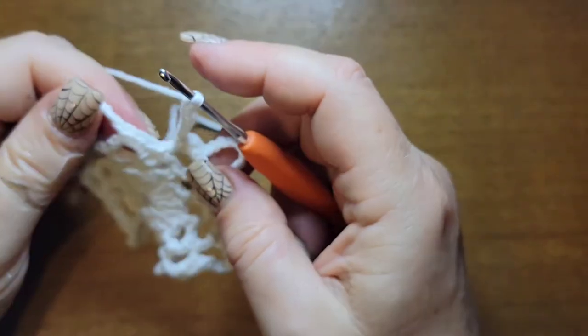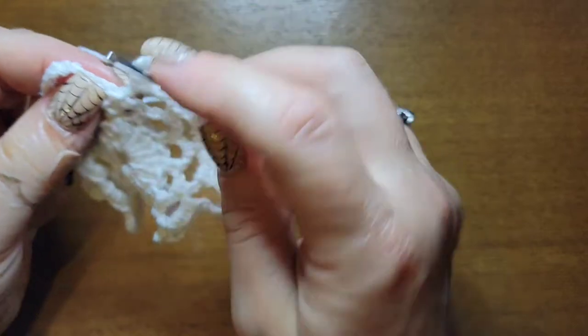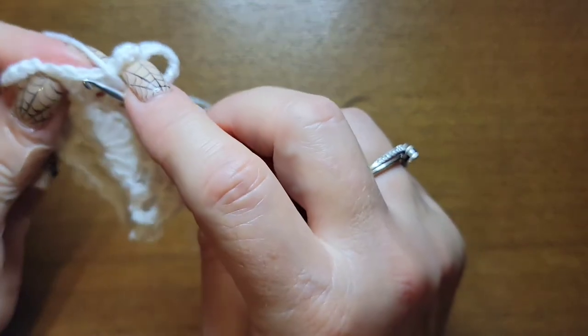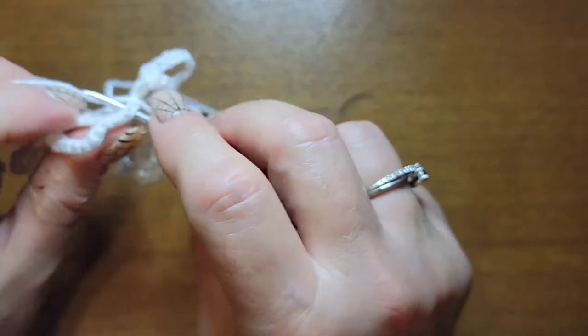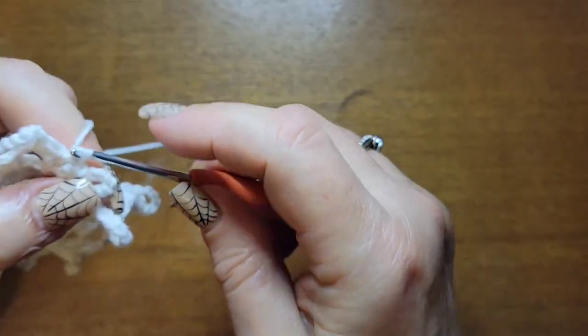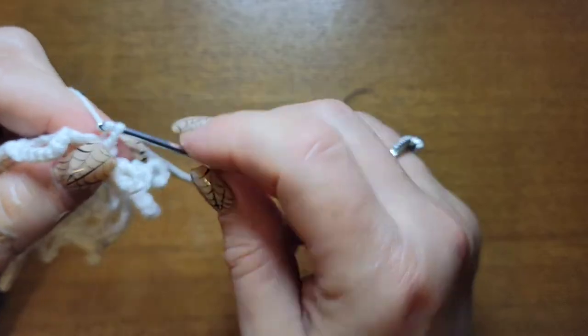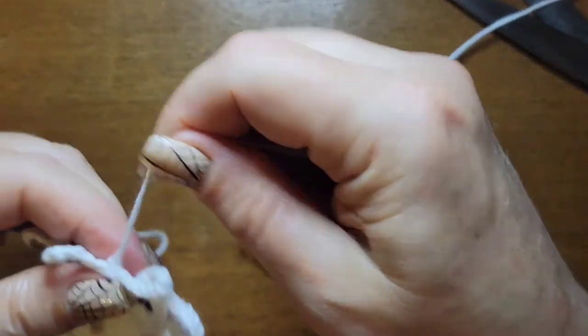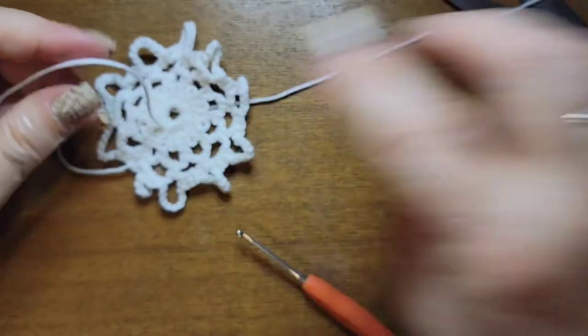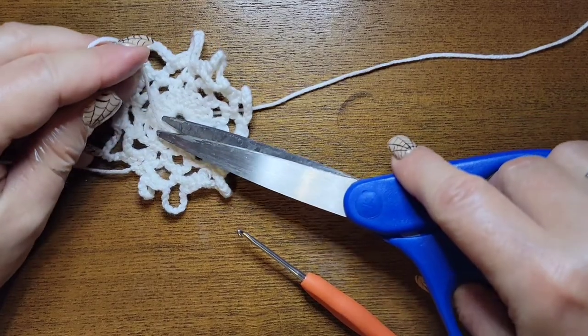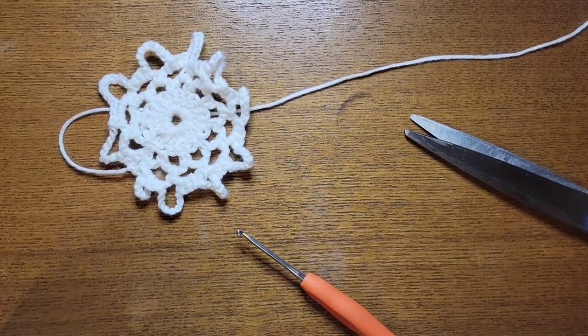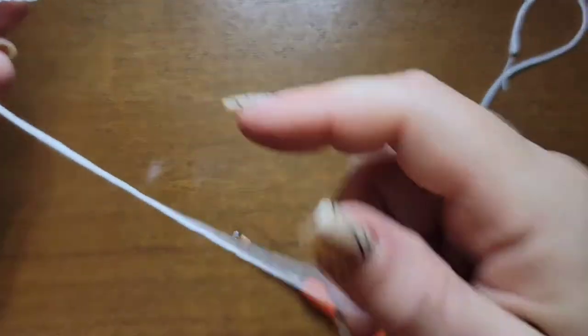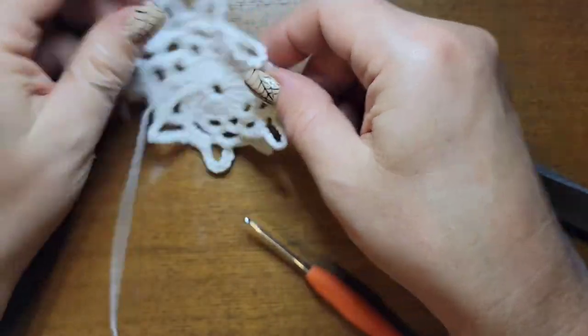I'm doing my last chain nine and I'm slip stitching into the first single crochet. After I slip stitch I just do one chain because we need to cut. Now this, because it's weaved in, is safe to cut. All right, so here she is so far—pretty cute.